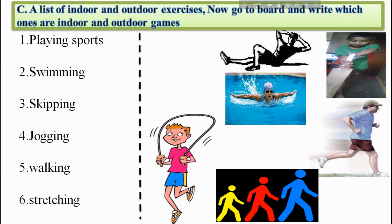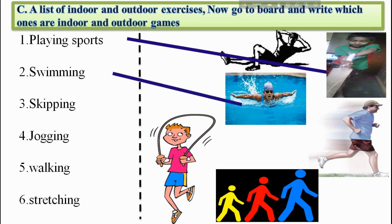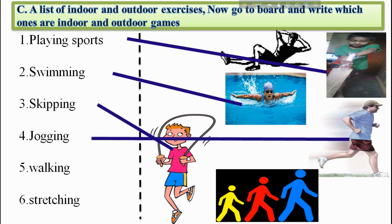Here is a list of indoor and outdoor activities. Now go to the board and write which ones are indoor and which are outdoor: games, playing sports, swimming, skipping, jogging, walking, and stretching.